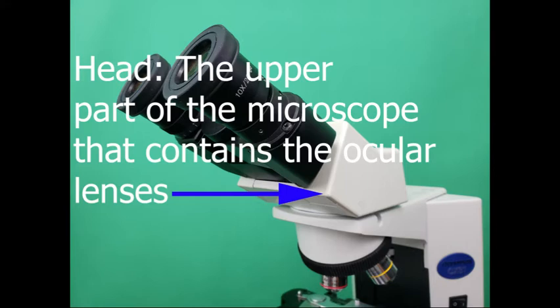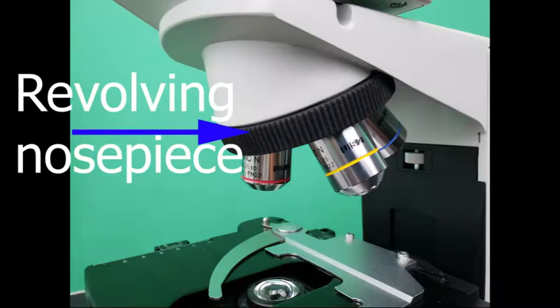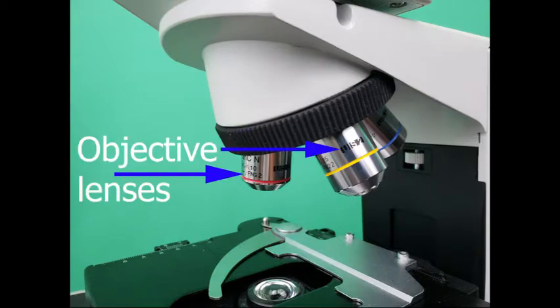Head: the upper part of the microscope that contains the lens and includes the ocular lens, revolving nosepiece, and objective lens.